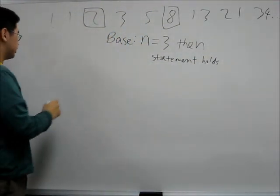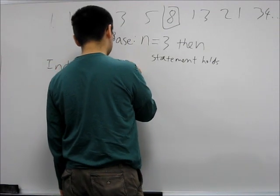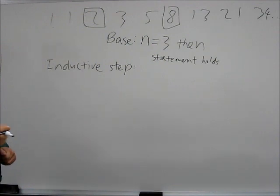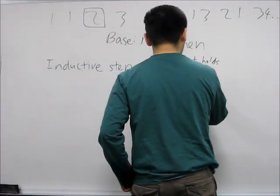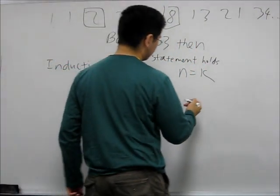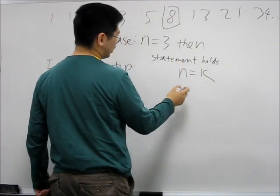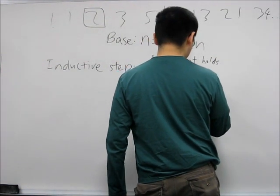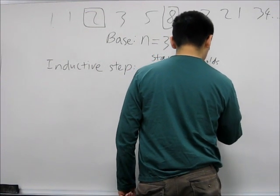So that's going to be our base step. And for the inductive step, we're going to pick an arbitrary n and call it k, so n equals k. Because this is strong induction, we can also assume that not only does the statement hold for n equals k, but also the statement holds for n equals k minus 1 and n equals k minus 2.